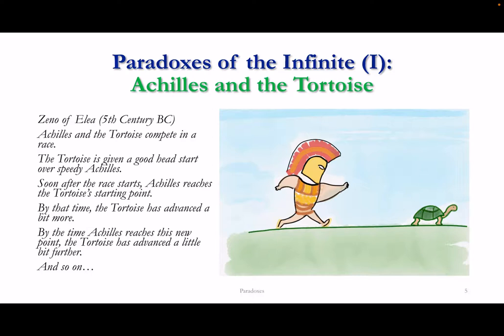To briefly remind ourselves: the idea is that Achilles and the tortoise compete in a race, with the tortoise starting ahead. Even if Achilles is much faster, by the time he reaches where the tortoise was one instant ago, the tortoise will have moved a little further on. The paradox suggests that Achilles will never reach the tortoise.